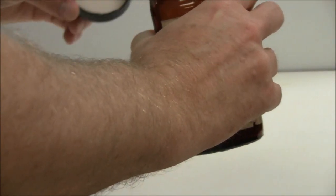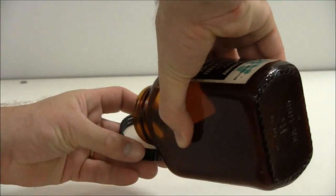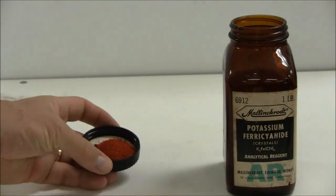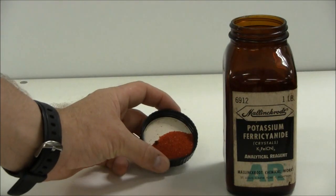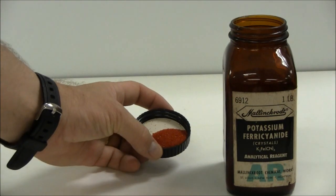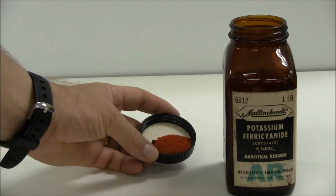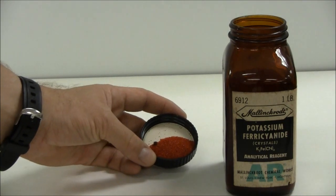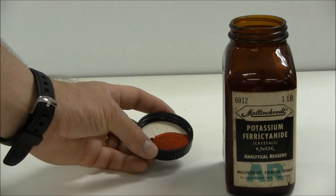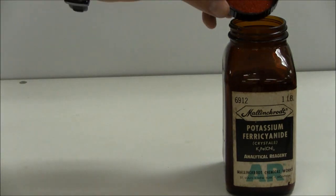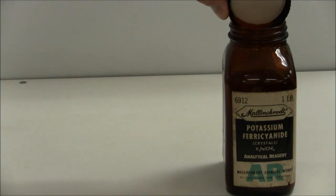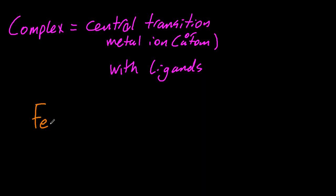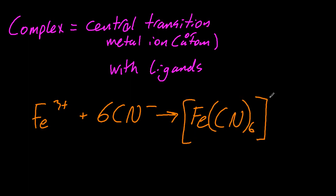So this is iron 3 plus with some cyanides around it, 6 specifically. Now you can see that's a beautiful red color there. Now you think if there's cyanide there, it could be really dangerous. But luckily the cyanide ions that are bonded as ligands to the central transition metal ion won't therefore bond to the iron in my blood and cause me dreadful problems. The equation for that could be iron with 6 cyanide ions. Now don't forget the cyanide ion is negative and so the complex is also going to be negative.